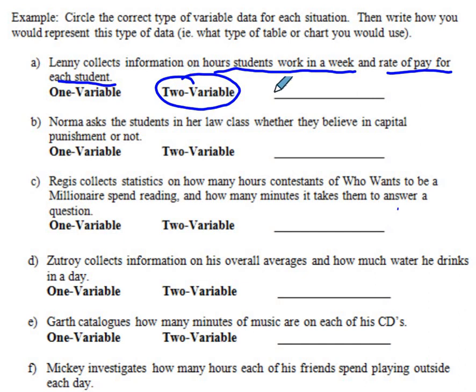So how can we demonstrate this relationship? Probably with a scatter plot or scatter graph or scatter plot. Now what about part B? Norma asks the students in her law class whether they believe in capital punishment or not.